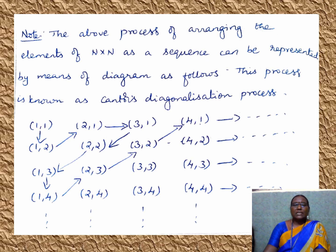In the previous theorem, we collected the elements as (1,1), (1,2), (2,1), and so on — arranging the elements of N×N as a sequence. This sequence is represented in a diagram known as Cantor's diagonalization process, in which we collect the elements of N×N diagonally.